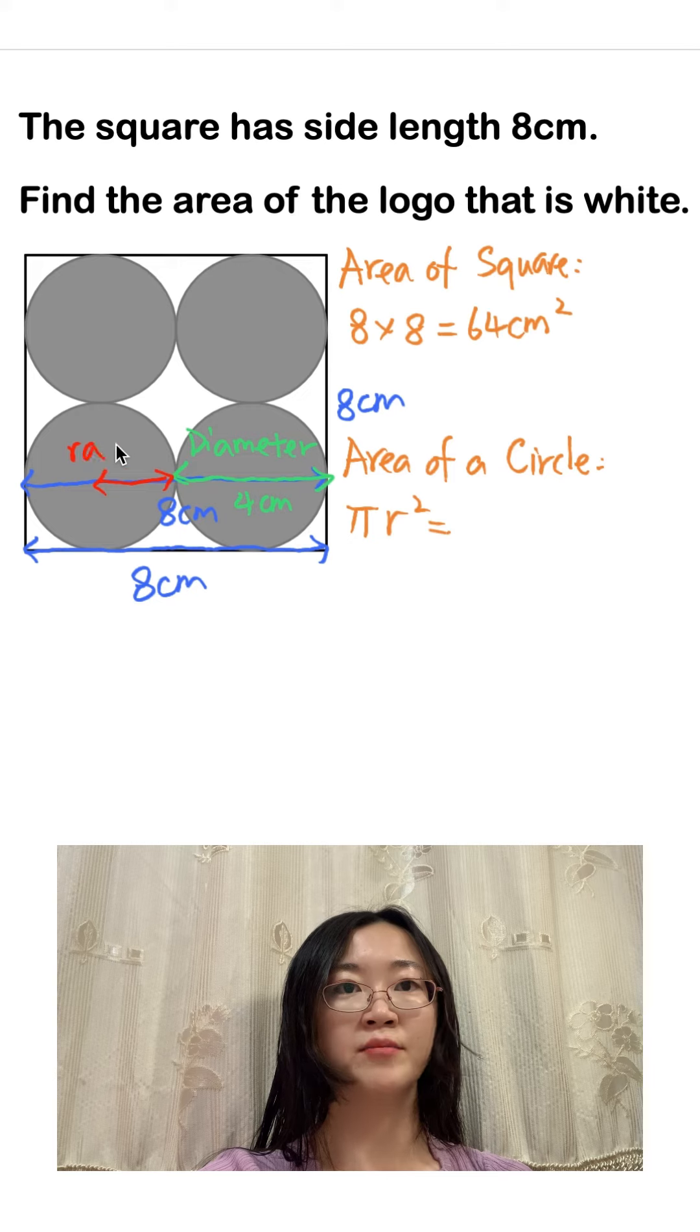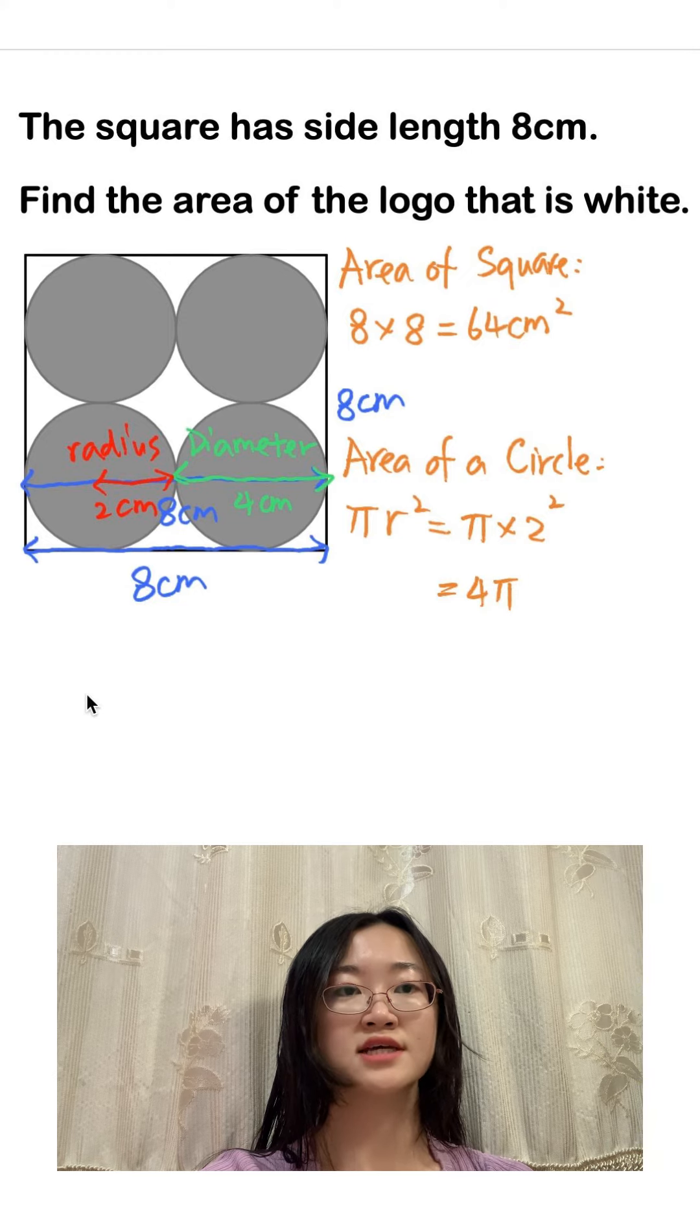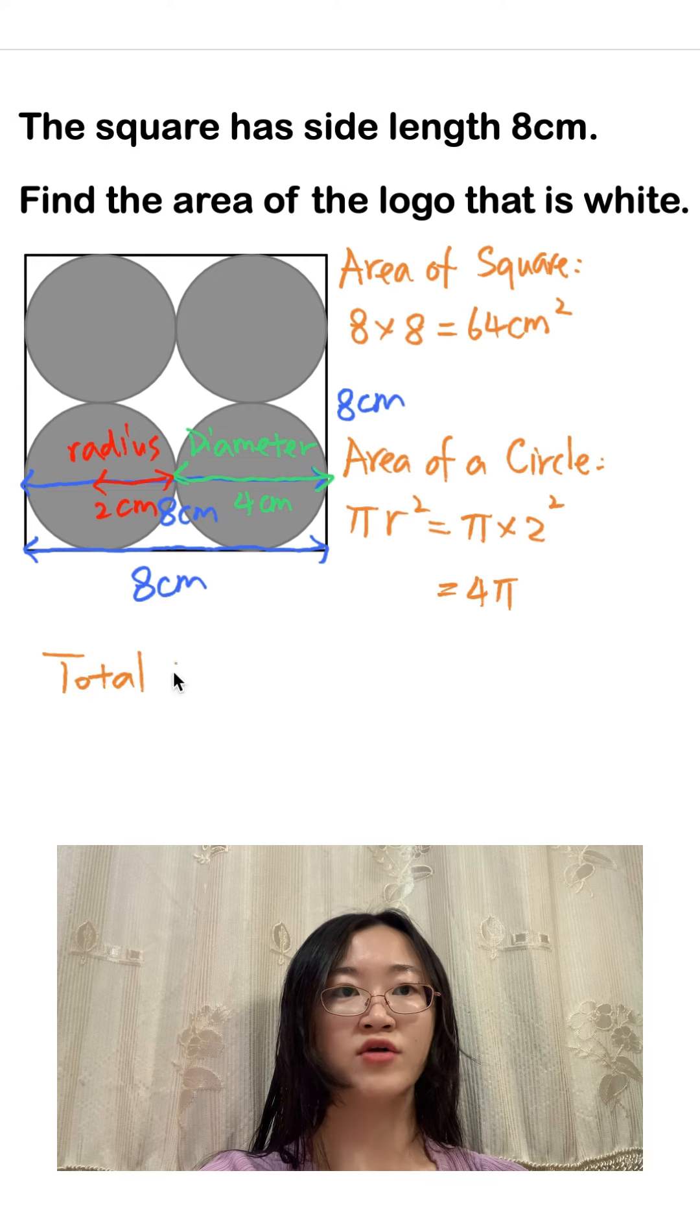So we do pi times two squared, that is four pi. The total area of four circles is four times four pi, that is 16 pi. Taking that away from the area of the square we now have 64 minus 16 pi and that is the answer.